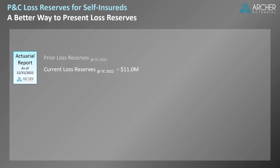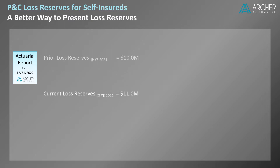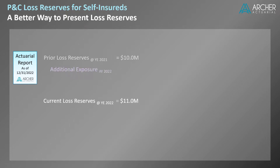Most reports also contain the prior estimate of loss reserves, which in our example is evaluated as of year-end 2021 and equals $10 million. Many actuarial reports also contain a reserve reconciliation — that is, a summary of the components underlying the change in loss reserve estimates. Let's look at each of these components more closely.